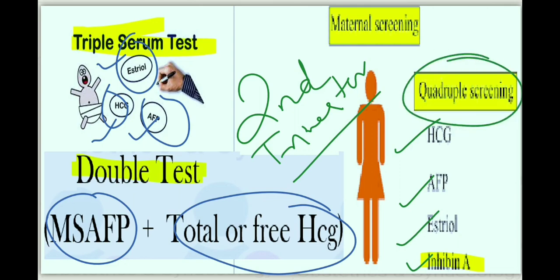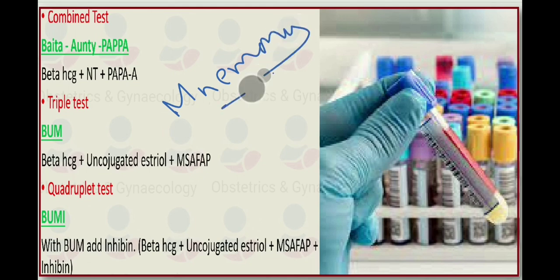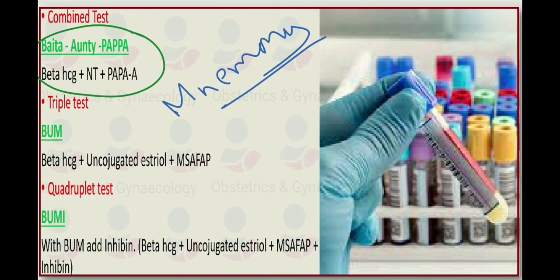In order to memorize these tests, we have specific mnemonics. For the combined test, the mnemonic is beta, auntie, papa — where beta stands for beta-HCG, auntie stands for nuchal translucency, and papa stands for pregnancy-associated plasma protein A.